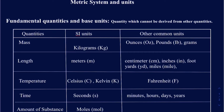A fundamental quantity is any quantity that cannot be derived from another quantity. For example, if I have to measure the length of a table, length is actually a fundamental quantity. But if I have to measure the area of the table, area is a derived quantity because to find the area I would need the length and the width — both measured in meters or centimeters. So area is your derived quantity, while length is your fundamental quantity.